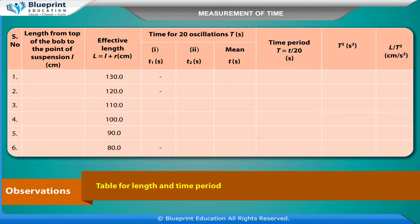Table for length and time period: Length from top of the bob to the point of suspension L (cm); effective length L_eff = L + R (cm). Serial numbers with corresponding L values: 1→130, 2→120, 3→110, 4→100, 5→90, 6→80. For each length, record time for 20 oscillations (T1 and T2 in seconds), calculate mean T, time period T = mean T / 20 seconds, T-square (s²), and L / T-square (cm/s²).